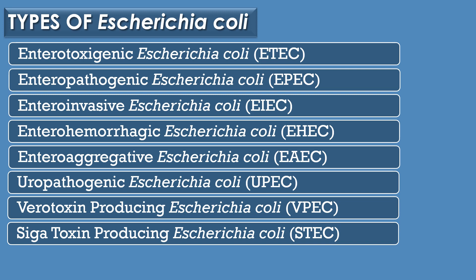Types of E. coli — there are 8 types of E. coli. They are: Enterotoxigenic E. coli or ETEC, Enteropathogenic E. coli or EPEC, Enteroinvasive E. coli or EIEC, Enterohemorrhagic E. coli or EHEC, Enteroaggregative E. coli or EAEC, Uropathogenic E. coli or UPEC, Verotoxin-producing E. coli or VPEC, and finally Shiga toxin-producing E. coli or STEC.